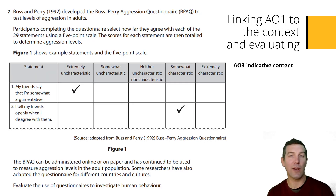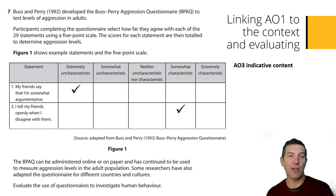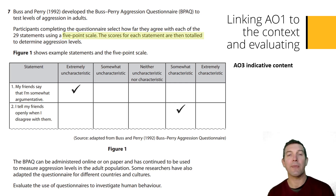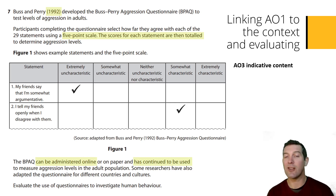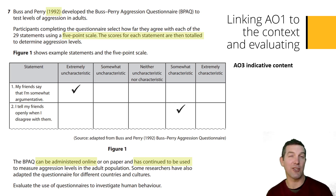Going back to the full question — you can pause this video at any point to read it carefully — there are several points we could pick out that link to those AO1 points. This questionnaire uses a five-point scale and totals up the score to get quantitative data from closed-ended questions. The fact that it was developed in 1992 and has continued to be used can be linked to the idea of retesting and checking reliability. The online administration of a questionnaire like this is also a great way to get a large sample and check reliability.